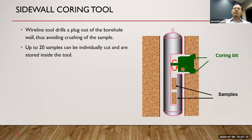The dimensions for the sidewall cores are small — around one to two inches (two to five centimeters) in diameter and length.